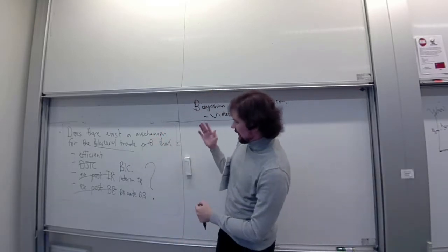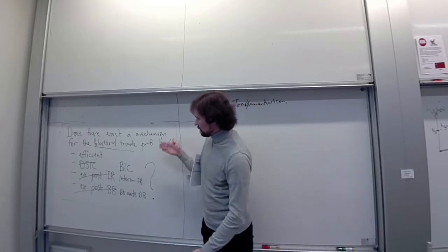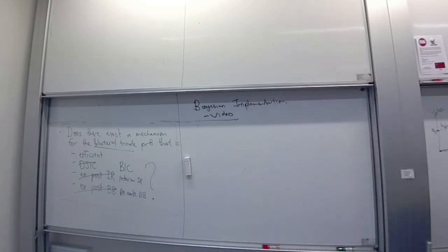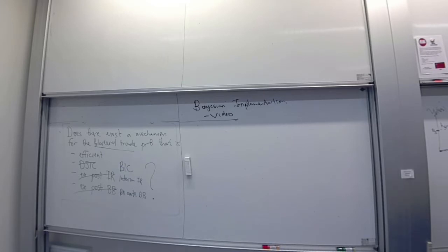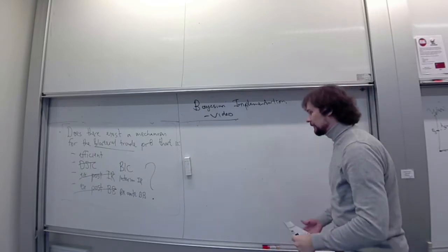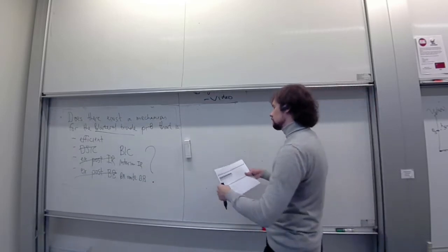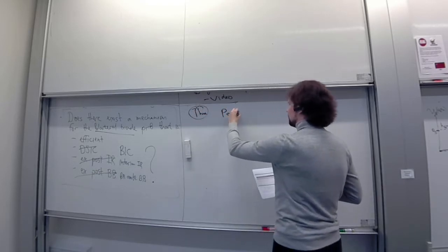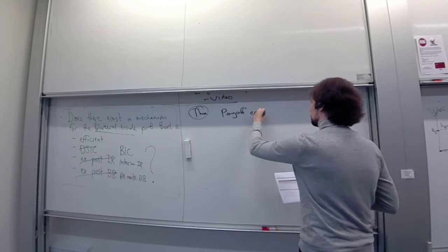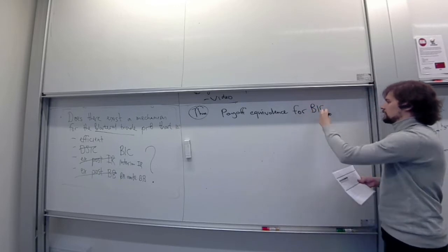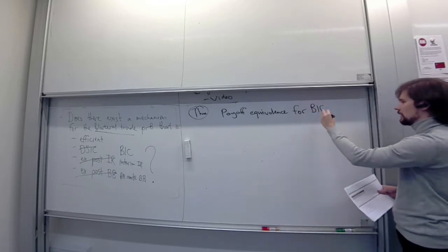Now we've introduced the concept of Bayesian implementation, and we can get back to the question: does bilateral trade admit a mechanism that is maybe not perfect but still good — so efficient, Bayesian incentive compatible, interim IR, and ex-ante budget balanced? We begin the same way we started this lecture. There is a version of the payoff equivalence theorem that holds for Bayesian mechanisms.